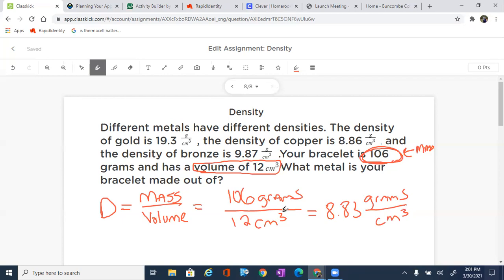Now we can make a decision at this point, which metal is it? Let's go ahead and go back to what we've read. The density of gold is 19.3 grams per cubic centimeter, so it can definitely not be gold because we are looking for 8.83. The next one says the copper is 8.86 grams per cubic centimeter. Notice that it's a little bit off, but it's pretty daggone close. So let's compare it to bronze. Bronze is 9.87 grams per cubic centimeters.